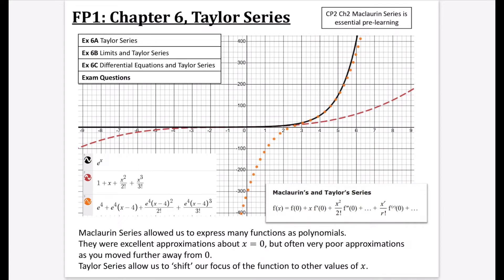I've got a visualization here to connect Taylor series to McLaurin series, because they are really similar to each other. This is what comes up in the formula book for the McLaurin series. The black line is e to the power of x, the red line is the McLaurin approximation, and the orange dotted line is the Taylor one. The McLaurin series allowed us to express many functions as polynomials.